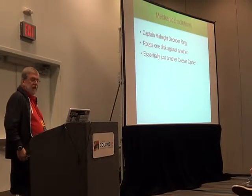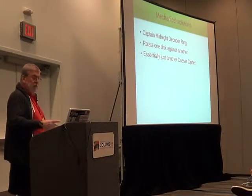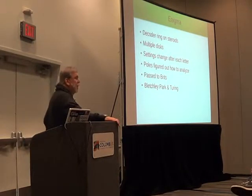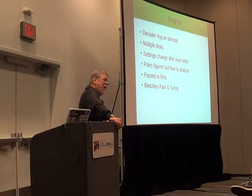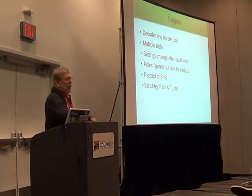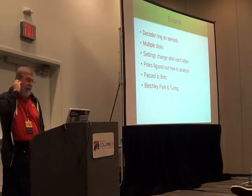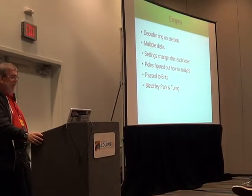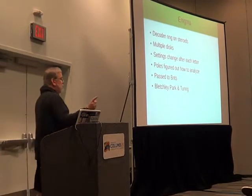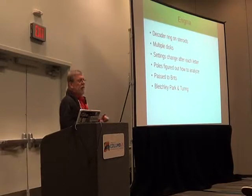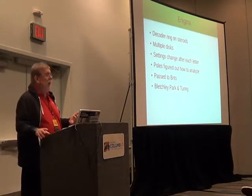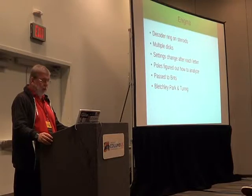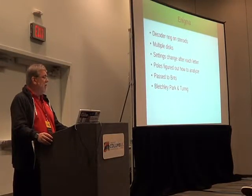There have also been some mechanical things, like the Captain Midnight decoder ring, which is really just another Caesar cipher — everything is rotated the same amount. And then there's the Enigma machine. We had a movie about all of that recently, a very interesting movie about Turing and the people in England trying to figure that out. Basically the Enigma was just a really, really complicated mechanical device. You would have a number of different disks, and each disk would be rotated after encrypting each letter. A group of Polish scientists figured out how to analyze this stuff, passed it along to the British, and at Bletchley Park they set up an operation to decode these things.